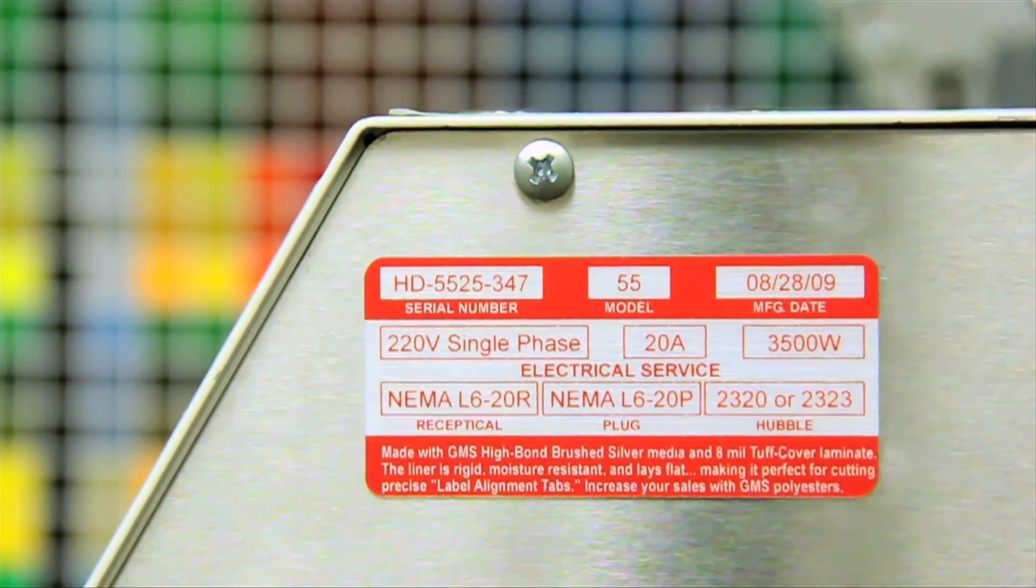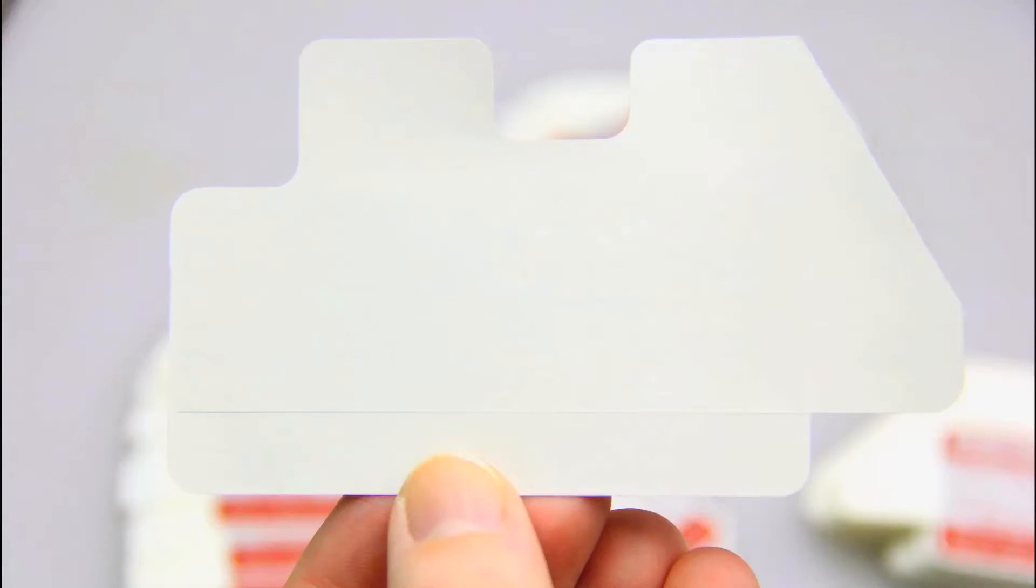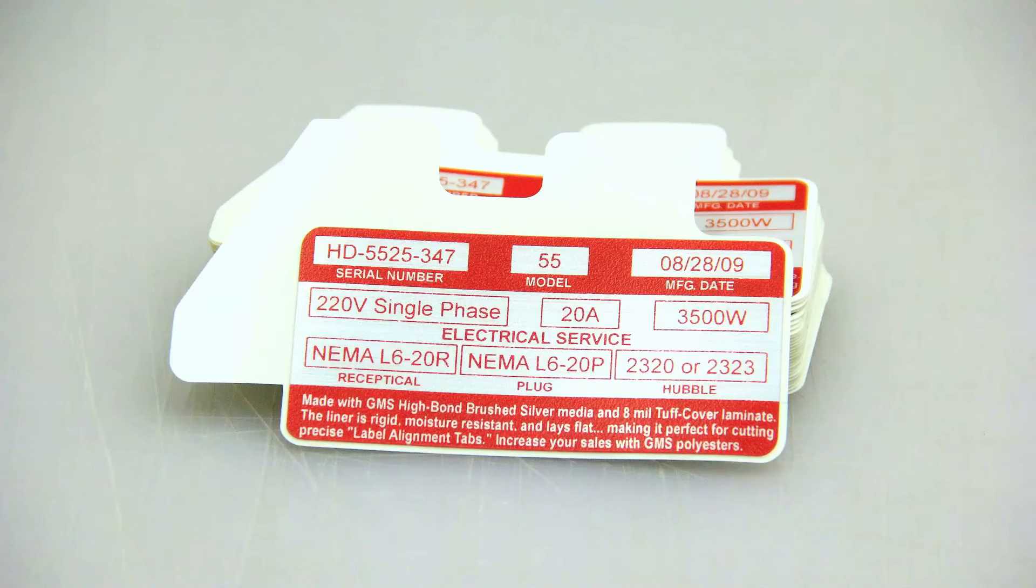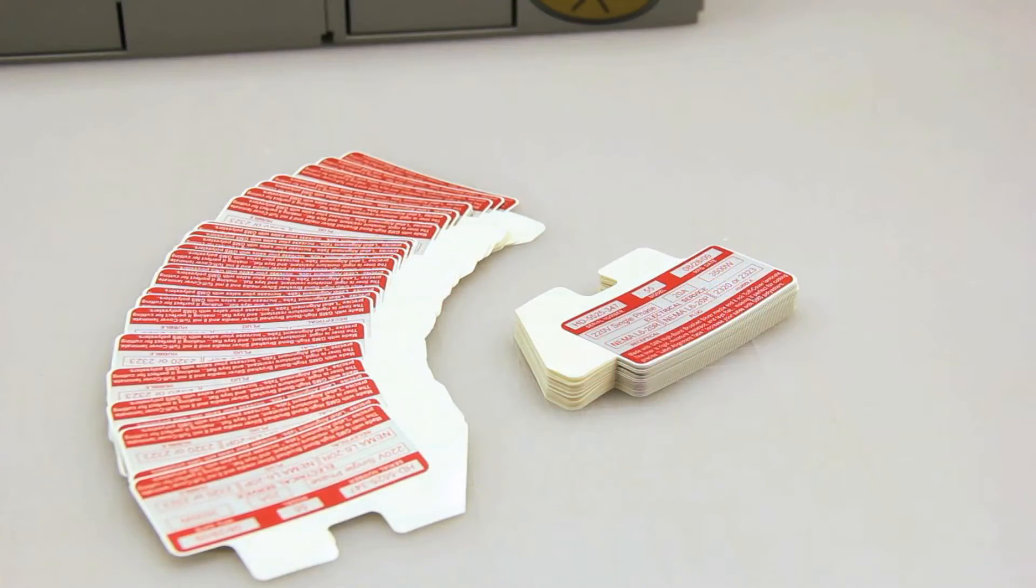The use of label alignment tabs increases speed and consistency on the manufacturing line by eliminating the use of more traditional measuring instruments.